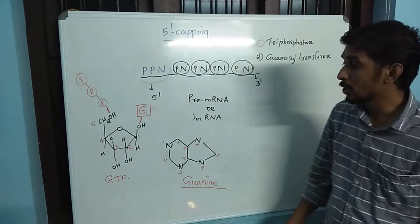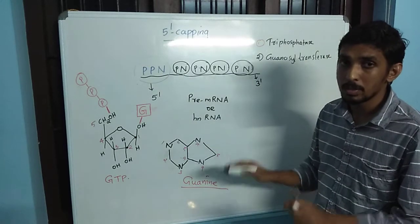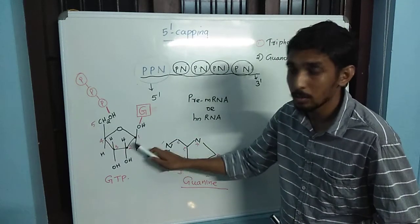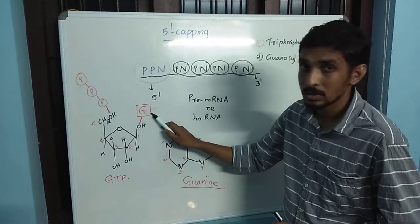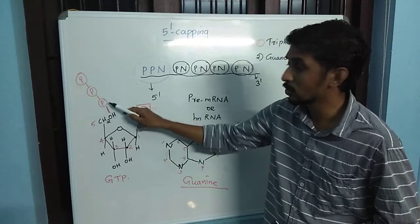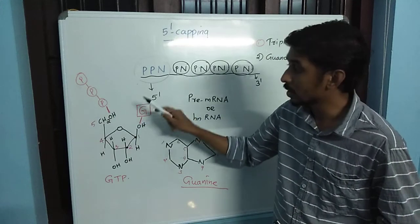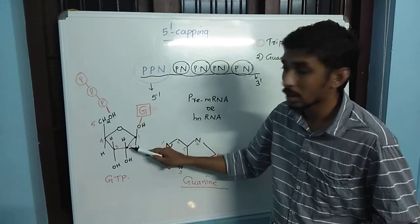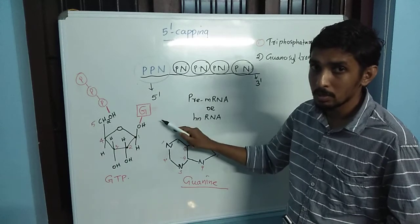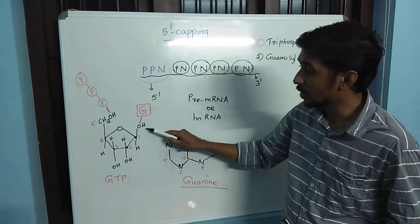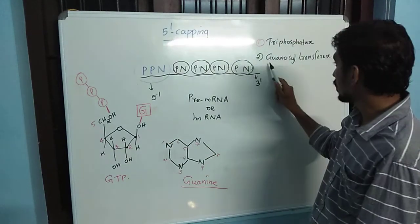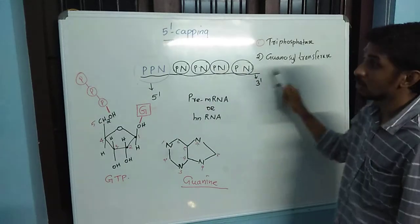During the addition of GTP by guanosine transferase, the structure of GTP consists of a ribose sugar and a nitrogen base called guanosine, along with three phosphate groups. Two of the three phosphates are bonded with the fifth carbon of the ribose sugar, whereas the nitrogen base guanosine is bonded with the first carbon atom of the ribose sugar. That is the structure of GTP.